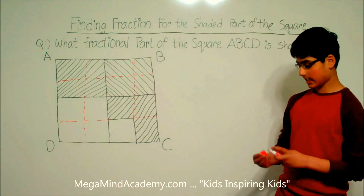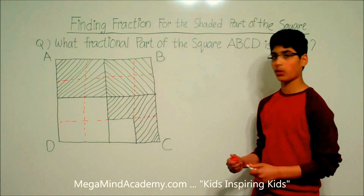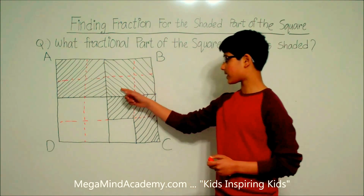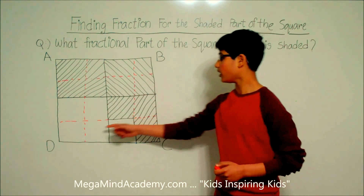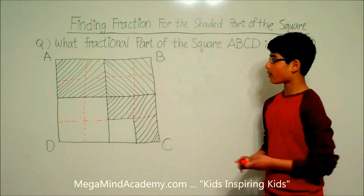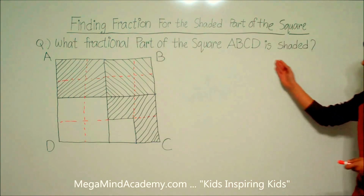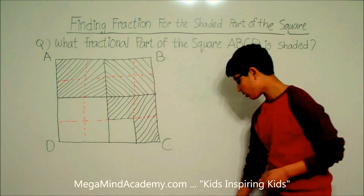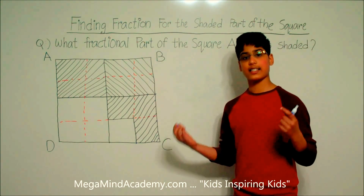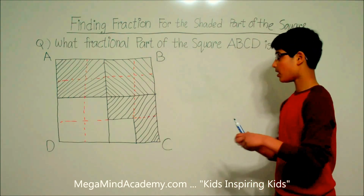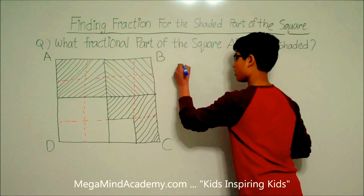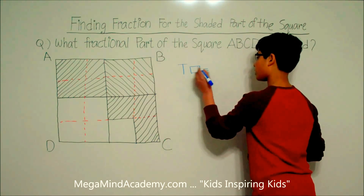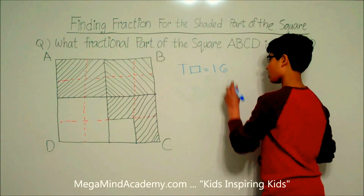As we can see, we now have 16 smaller equal squares: 1, 2, 3, 4, 5, 6, 7, 8, 9, 10, 11, 12, 13, 14, 15, and 16. To find the fractional part of square ABCD that is shaded, we remember that fraction means a part over a whole. So the whole is 16 smaller equal squares. The total number of squares is equal to 16.